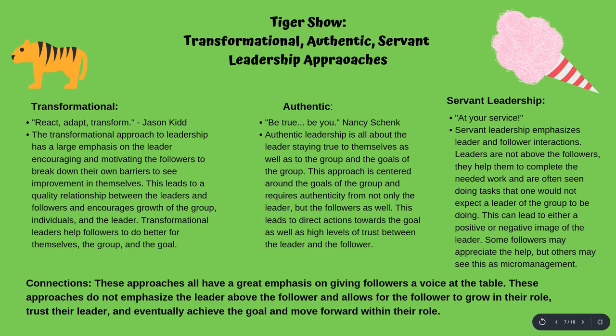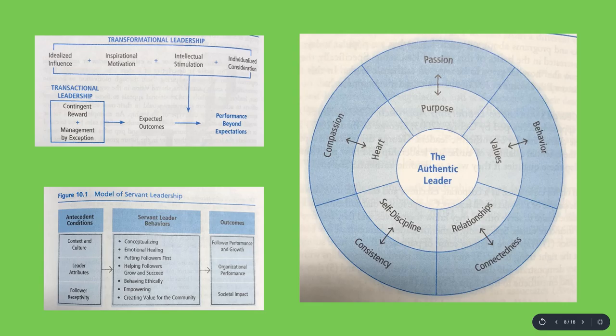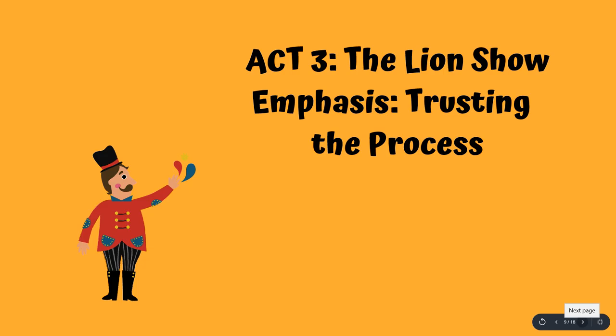For act two we have the tiger show, which focuses on leader-follower interactions. I included transformational leadership, authentic leadership, and servant leadership because this is when followers start to get a voice at the table. The leader is reaching out to followers — encouraging them in transformational, building trust in authentic, and really getting down and working with them in servant. Here are the models for authentic, transformational, and servant leadership.